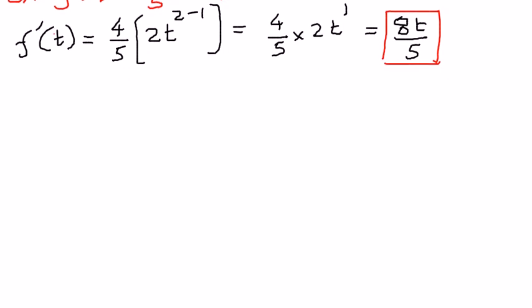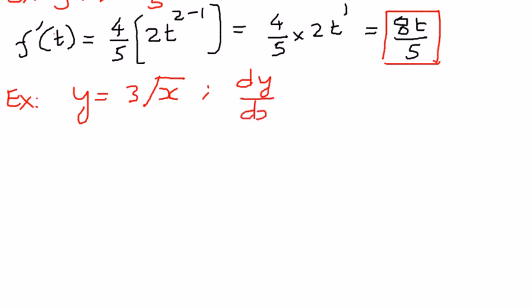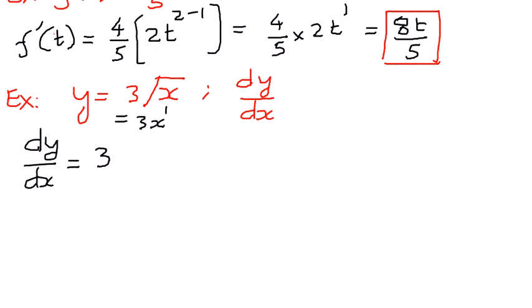Let's take another example. In this example, if we have a function y is equal to 3 times the square root of x, we want to differentiate this function with respect to x and find dy by dx. The way to do that: dy by dx — 3 is a constant, we put that outside. Then square root of x can be written as x to the power of one half, so I can write this as 3x to the power of one half.